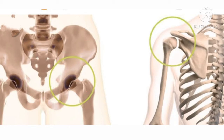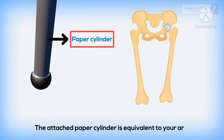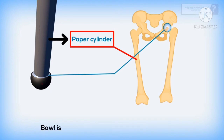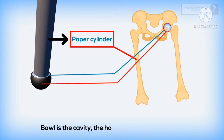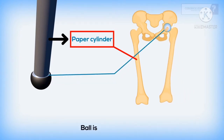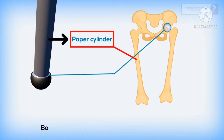Children, in the activity we did, the ball-ended paper cylinder is equivalent to the upper arm bone, and the bowl is equivalent to the cavity of the shoulder bone.